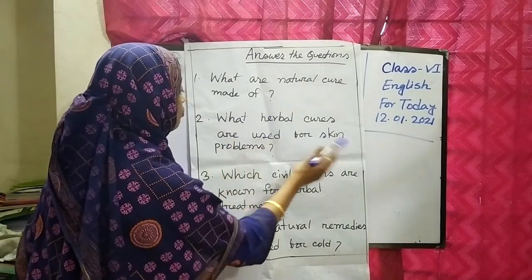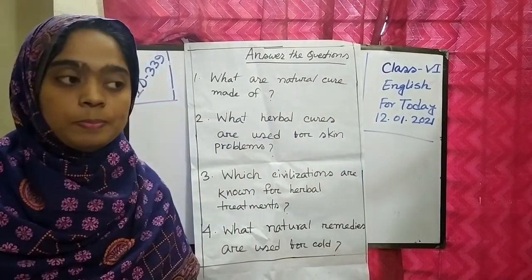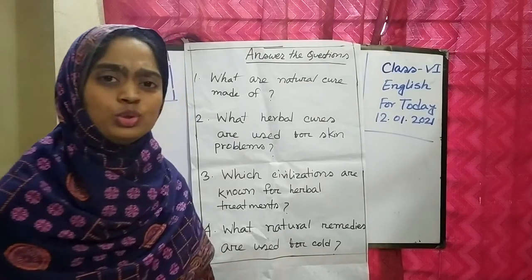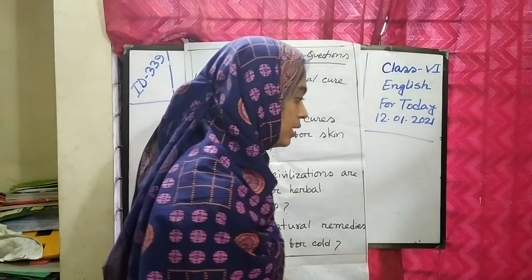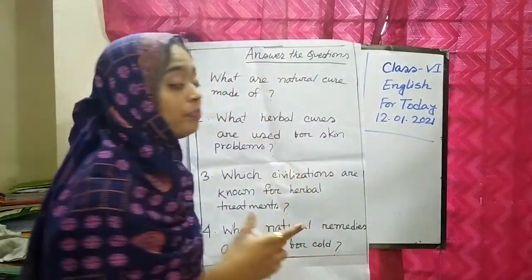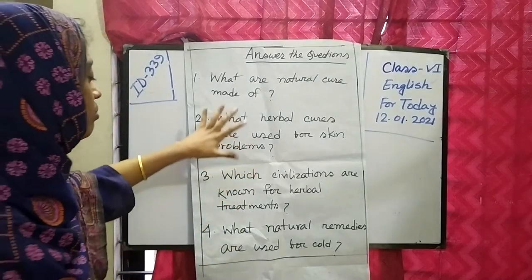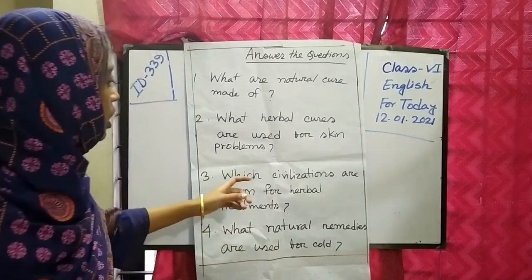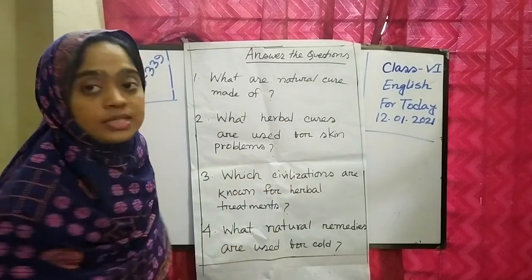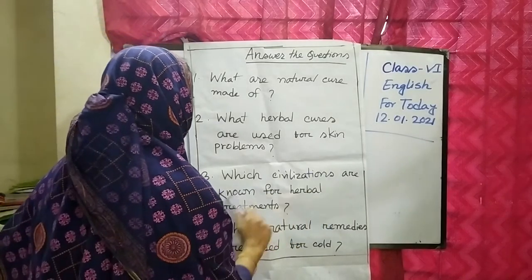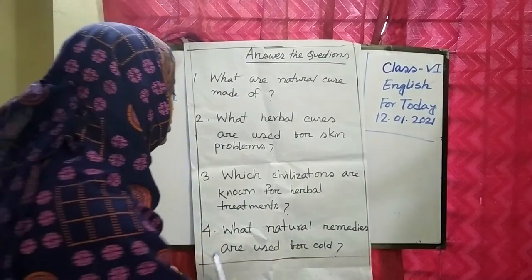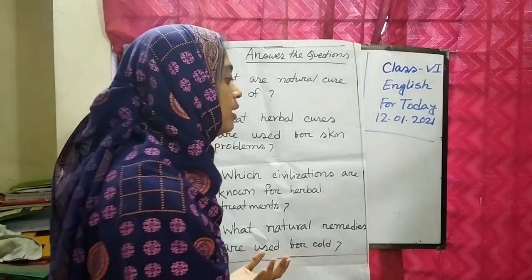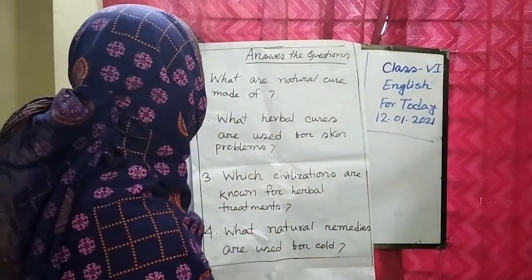Next: What herbal cures are used for skin problems? Turmeric, aloe vera, honey are used for skin. Which ones for skin problems? Garlic, turmeric, and neem are used for skin problems. Which civilizations are known for herbal treatments? Some ancient civilizations are known for herbal treatments. What natural remedies are used for cold? Honey and aloe vera are used for natural cold.